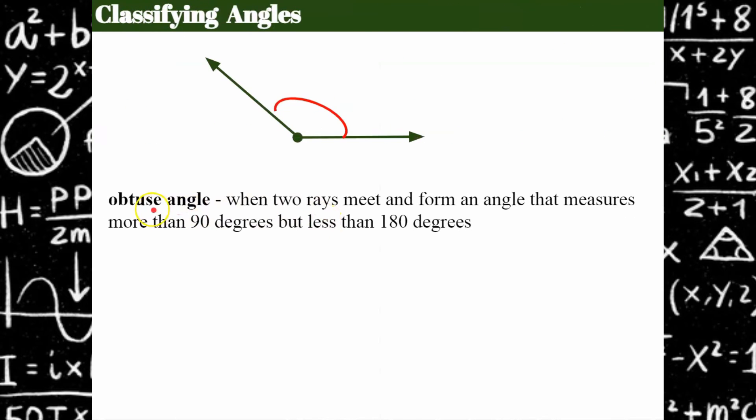Then our next angle is an obtuse angle, noticing that this goes past the 90 degree mark. 90 degrees would make it perpendicular. So an obtuse angle is when two rays meet to form an angle that is greater than 90, but less than 180 degrees.